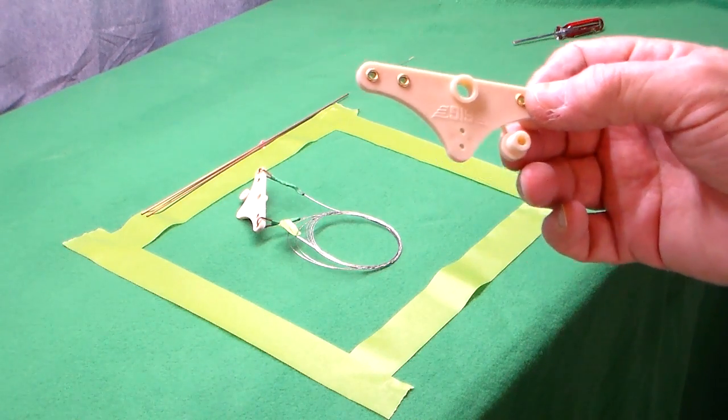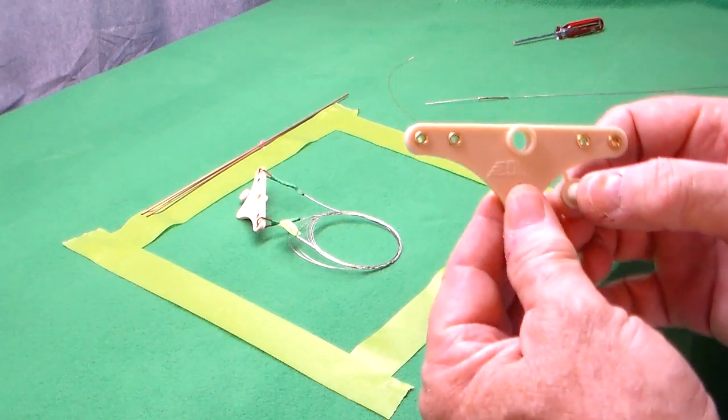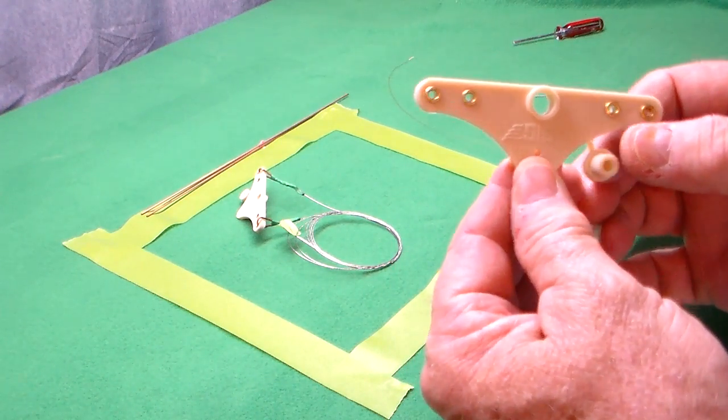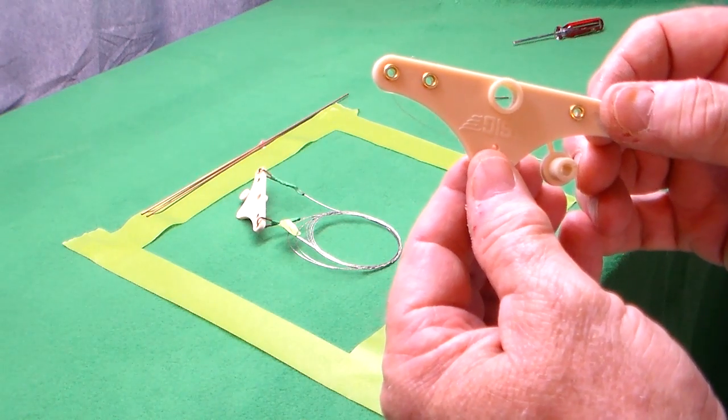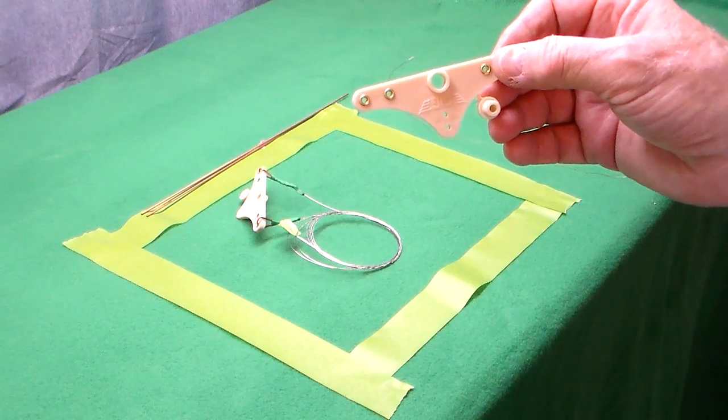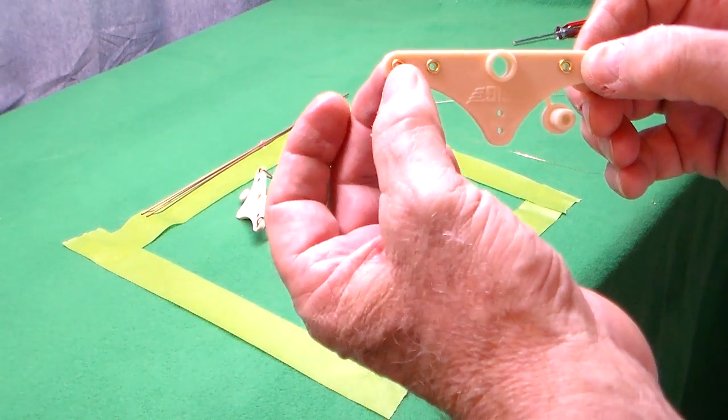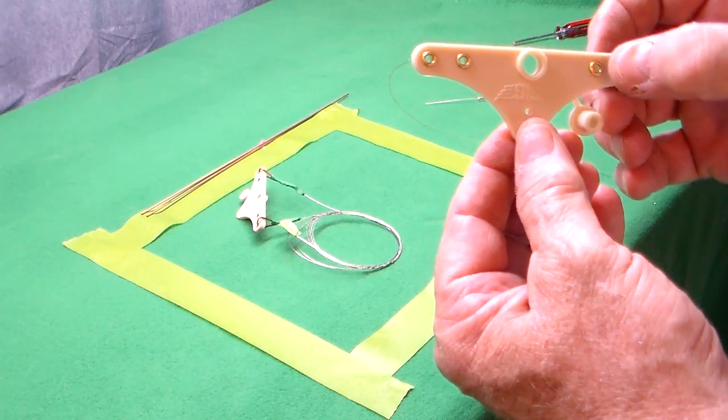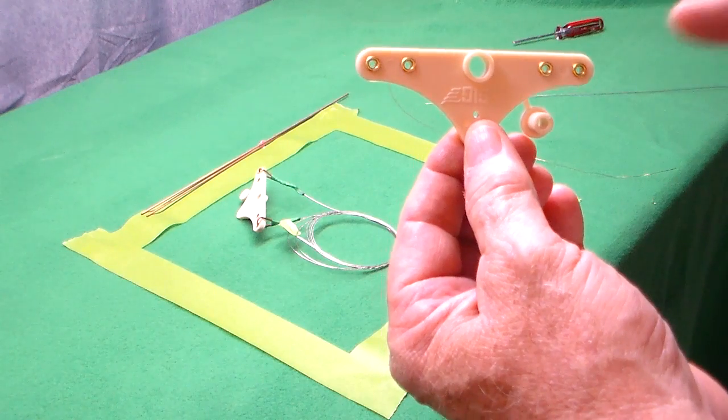The bell crank of course pivots around here. This is a Sig bell crank, a nylon bell crank that I bought from Eric Rule at RSM Distribution out in California. He buys Sig bell cranks and puts these bushings—you see these brass bushings that are put into the holes where the lead out wires go—these are very important.